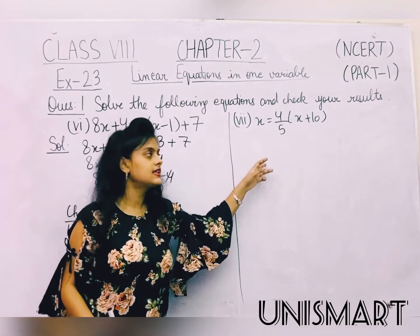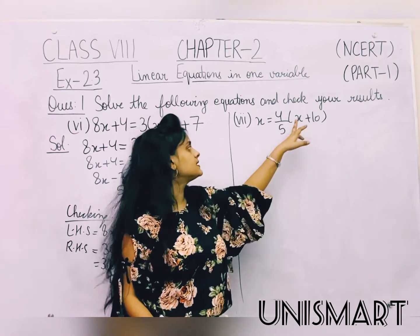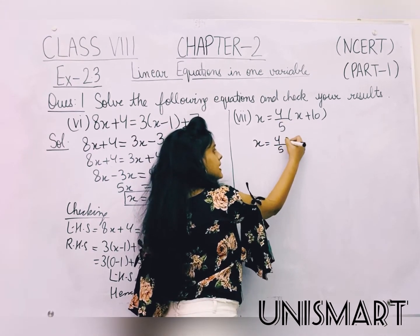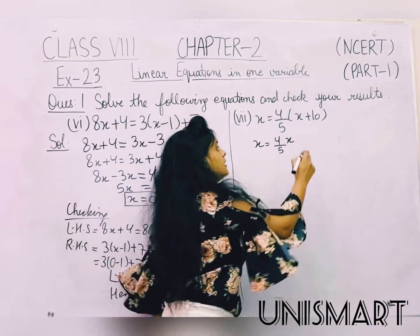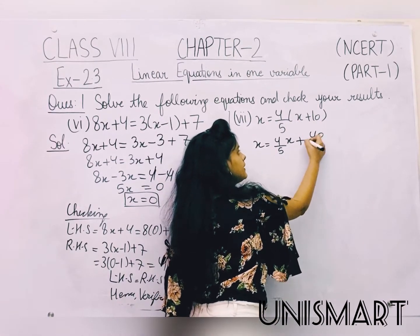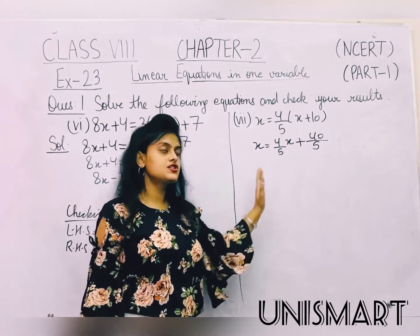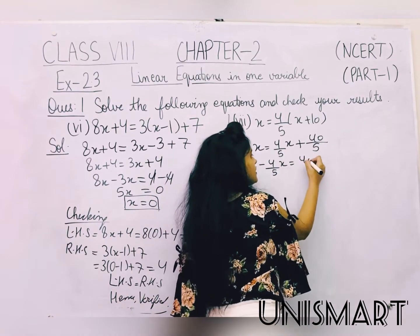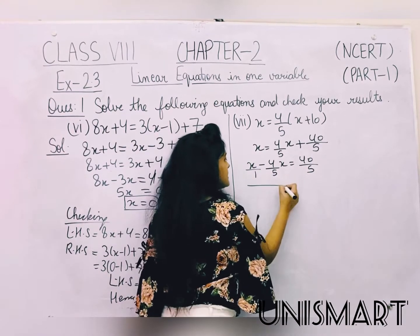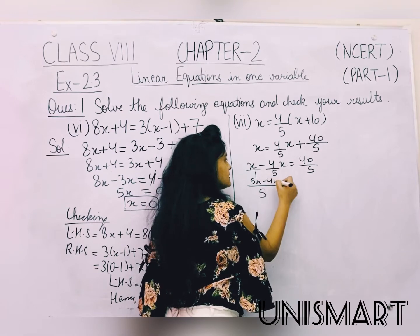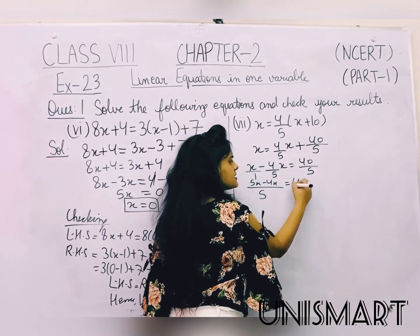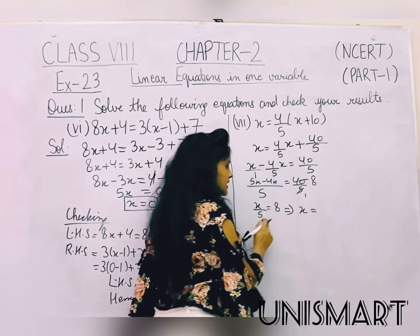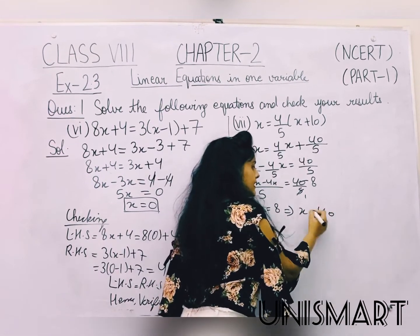Moving forward to the 7th part: x is equal to 4 by 5 multiplied by (x plus 10). We expand the bracket: 4 by 5 into x is 4x by 5, plus 4 into 10 is 40 divided by 5. Shifting 4x by 5 to the left-hand side gives x minus 4x by 5 equals 40 by 5. Using LCM of 5: 5x minus 4x equals 40, so x by 5 equals 8. Multiplying both sides by 5, x equals 40.